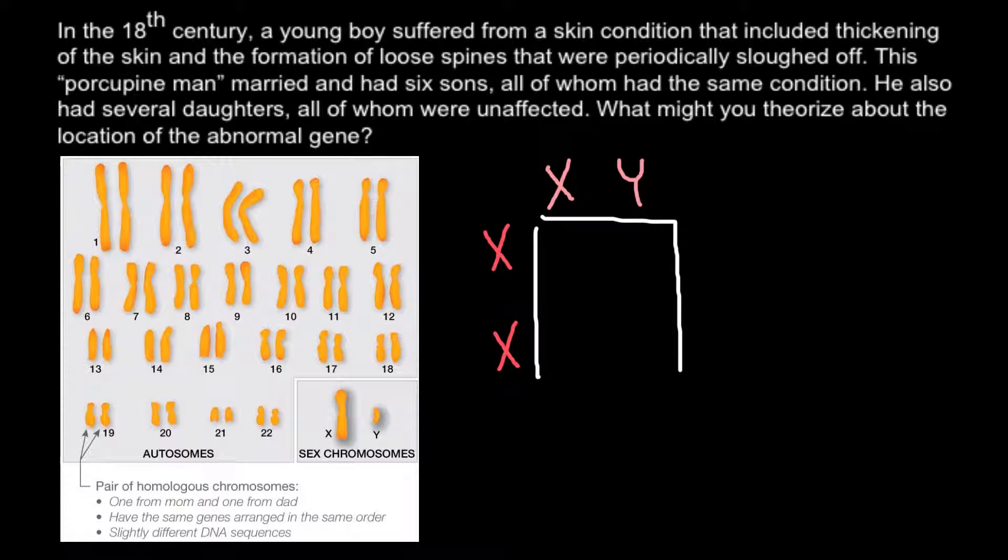Here is a Punnett square, and we can predict genotypes and, of course, phenotypes of the progeny. One of the chromosomes comes from the mother side, another from the father side.